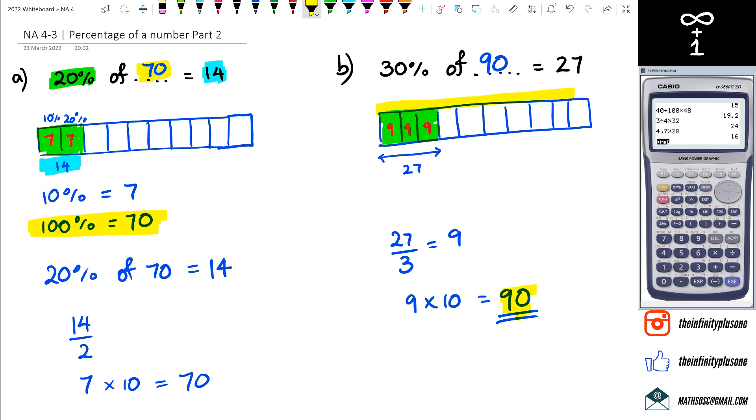So basically this 90 here is the full length of the box, and 30% is three of those boxes which is actually equal to 9.